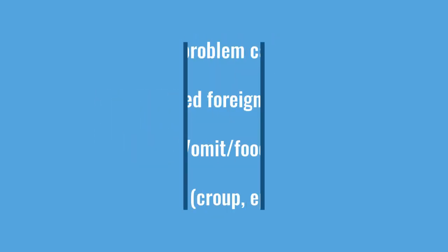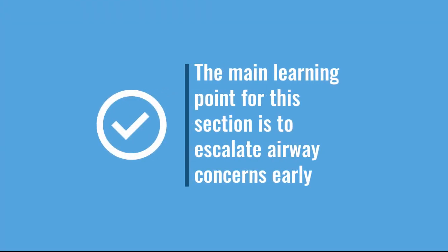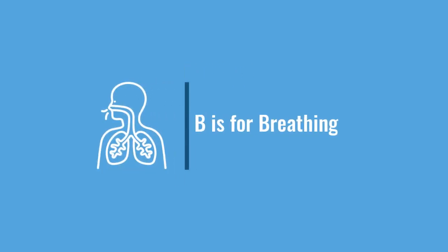Escalate airway care early. Think about whether there's a foreign body, any vomit obstructing the airway, or conditions like epiglottitis — going back to your history, have they been immunized against Hib? There are airway adjuncts we can use, but the key learning point is: if you've got an airway problem, escalate it. In reality, airway problems are quite uncommon, and the majority of children will have breathing problems rather than airway problems.